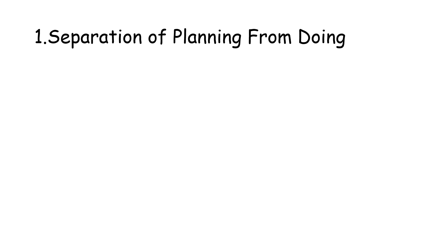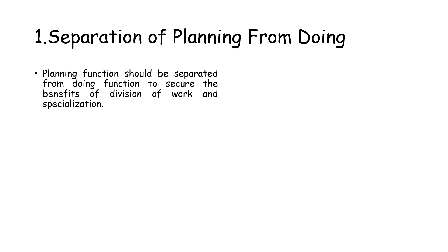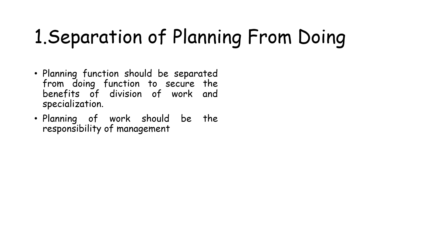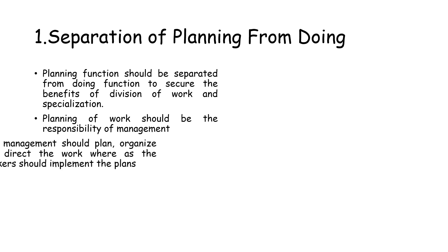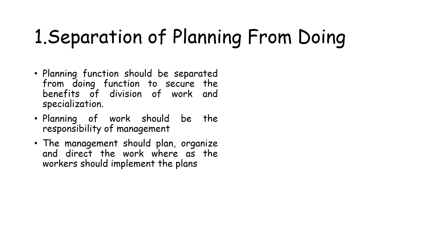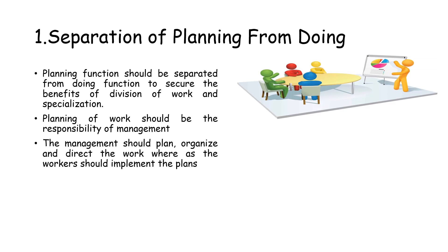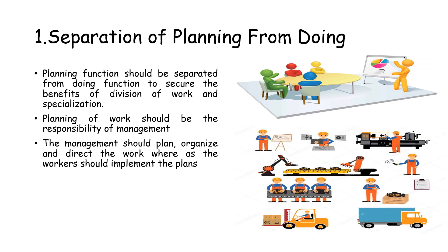The first important technique is separation of planning from doing. Taylor suggests that the planning function should be separated from the doing function to secure the benefits of division of work and specialization. The work of planning should be the responsibility of management — to plan, organize and direct the work — whereas the worker should implement the plans. The top-level management engages in planning duties assigned to lower-level managers, while workers execute the tasks given to them within the specified time period.